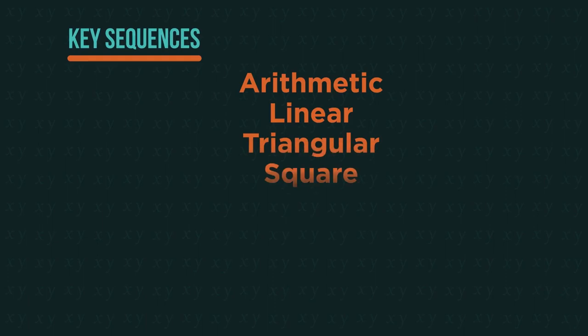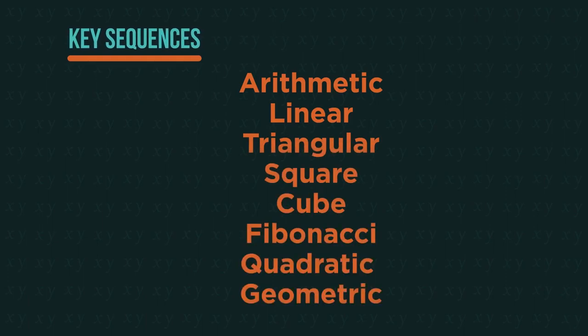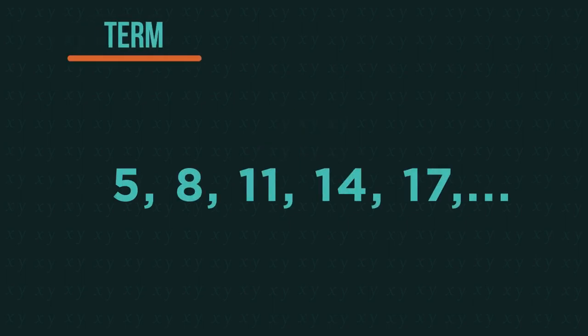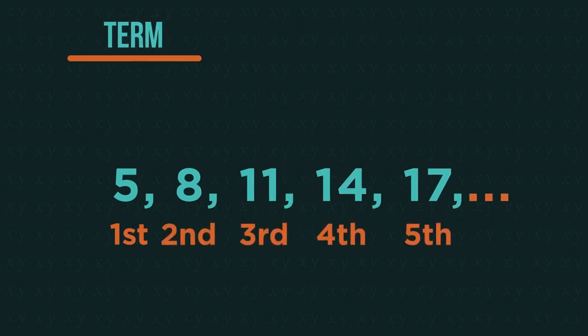In this video we're going to discover some key sequence terminology and how to recognize and generate some important sequences. Each number in the sequence is called a term — this is the first term, second term, and so on. The ellipsis tells us that the sequence carries on forever.